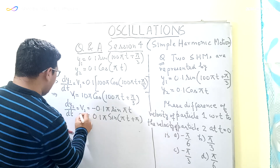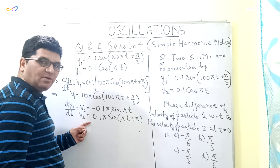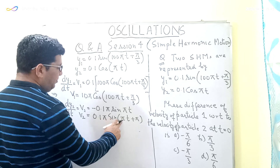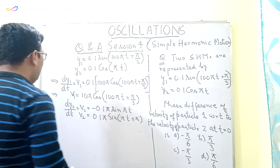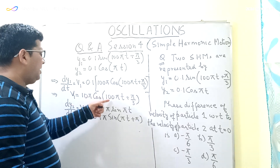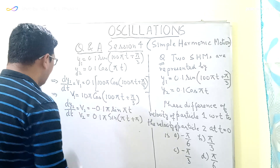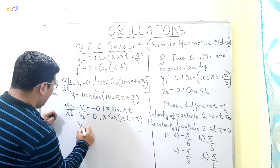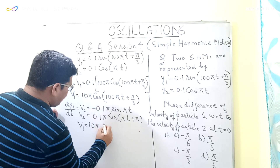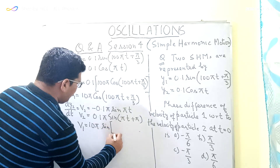Now the instantaneous velocity of the second particle is equal to 0.1π sin(πt + π), and the instantaneous velocity of particle 1 is 10π cos(100πt + π/3). What I will do is convert this cosine equation into sine form. So v1 can be written as 10π times sine of something. I will write this in the sine form.